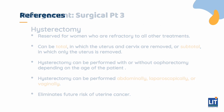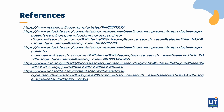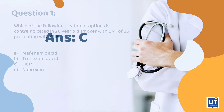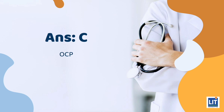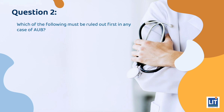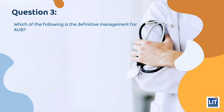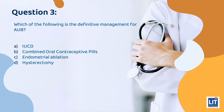And that is all for the presentation. These are the references. Quiz time: Question 1 asks which treatment option is contraindicated in a 28-year-old smoker presenting with AUB — the answer is C. Question 2 asks which must be ruled out first in any case of AUB — the answer is B. Question 3 asks which is the definitive management for AUB — the answer is D.